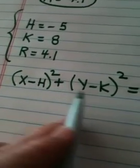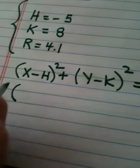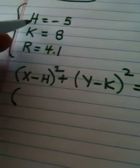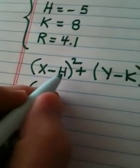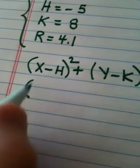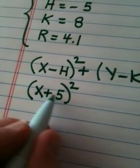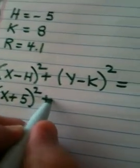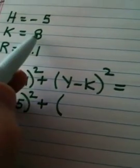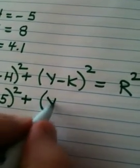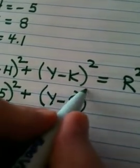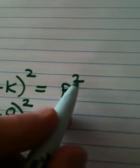Now we plug in what we know. You don't plug in for X and Y, you plug in H, K, and R. When I plug in H, I plug in a negative 5, but notice what happens: minus minus, a minus is going to become a plus. So this becomes X plus 5 quantity squared. There's always a plus in the middle. K is 8, so when I plug in here I have Y minus 8 squared.